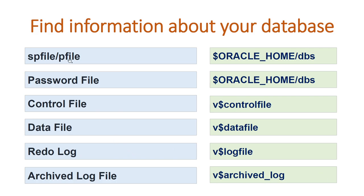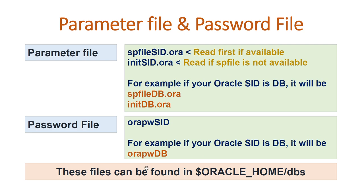The spfile, pfile, and password file are stored in the Oracle home DBS location. Control file information can be found from the dynamic view V$CONTROLFILE, data files from V$DATAFILE, redo logs from V$LOG, and archive log files from V$ARCHIVED_LOG. There are two kinds of parameter files: the binary-based spfile and the text-based init file.